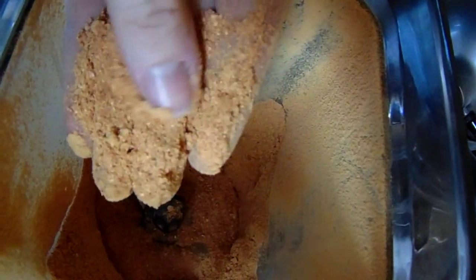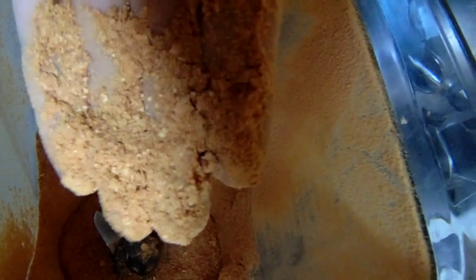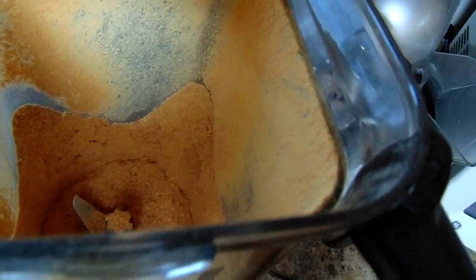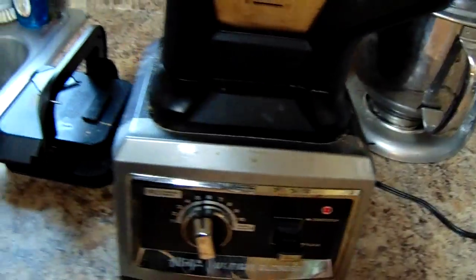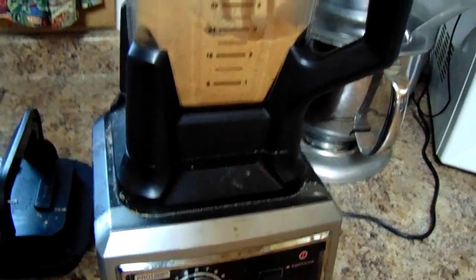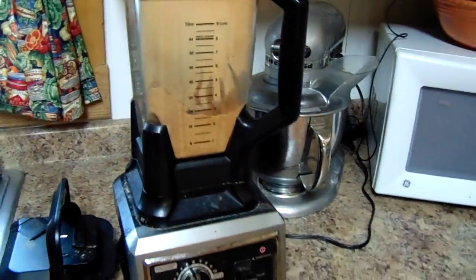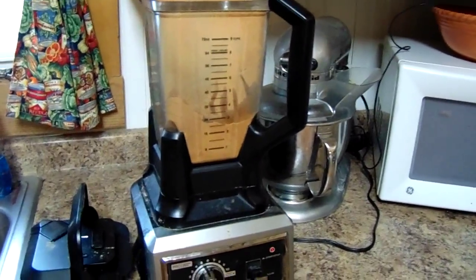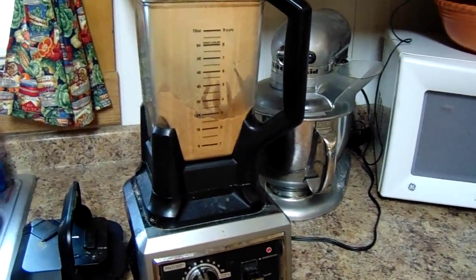And if you don't want some of the bigger coarser chunks in there, then you can run it through like a flour sifter and then run those back through the blender if you'd like. But it works up into a really nice tomato paste if you need tomato paste for something. I myself don't really mind the chunks.